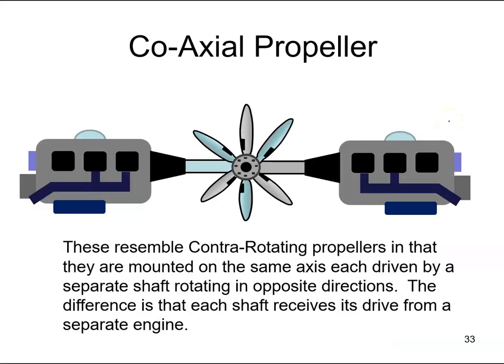A variation of the counter-rotating propeller is the coaxial propeller. Again, it's essentially two propellers — one rotating to the right and one rotating to the left — but the difference is that they're driven by two different engines. One engine drives the propeller that rotates to the right, and the other engine drives the propeller that rotates to the left. It would be fairly rare to see one of these, but at least you know what they are.